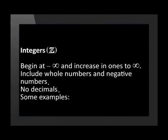Integers begin at negative infinity and increase in ones to positive infinity. They include all whole numbers as well as negative numbers that don't have any decimals. Some examples are negative two, negative one, zero, and one. Often people get confused and think that negative one-half is an integer because of the negative sign, but remember the definition — the number must be whole.